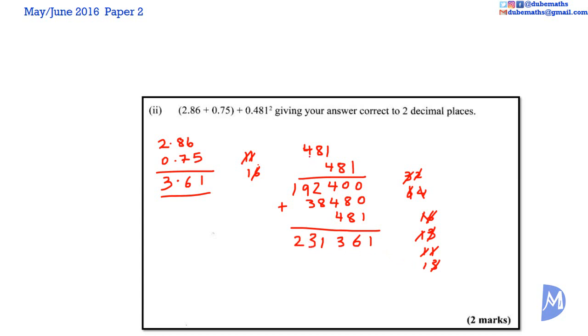1 plus 1 is equal to 2. We have 0.481 multiplied by 0.481. So we have 3 decimal places being multiplied by 3 decimal places, so the answer has 3 plus 3 which is equal to 6 decimal places. 1, 2, 3, 4, 5, 6. So the answer is equal to 0.231361.